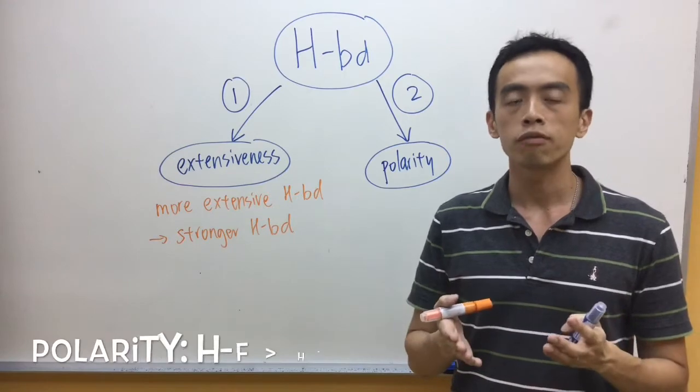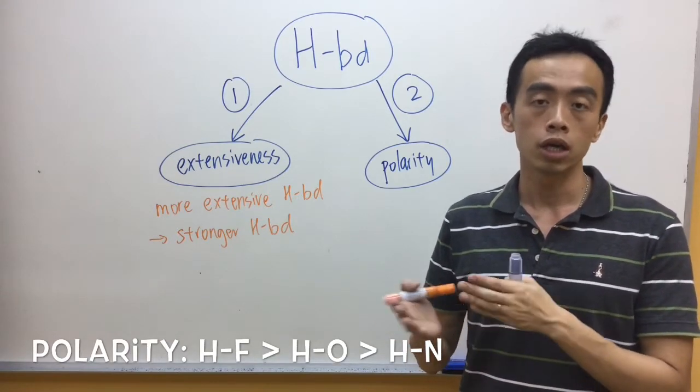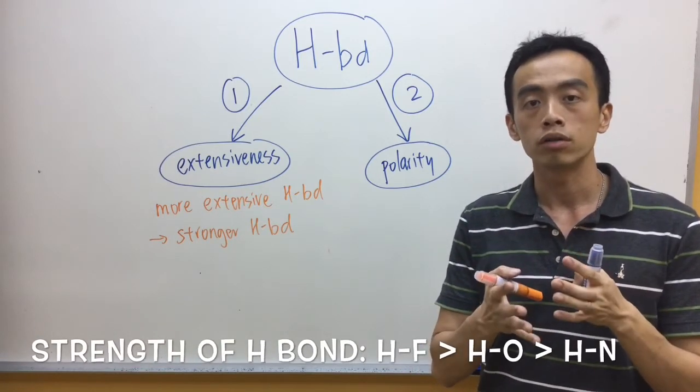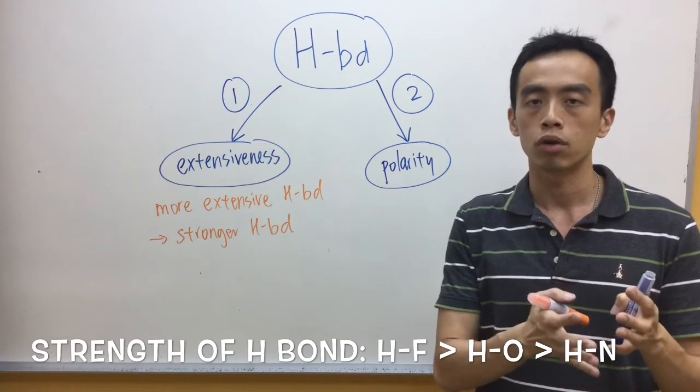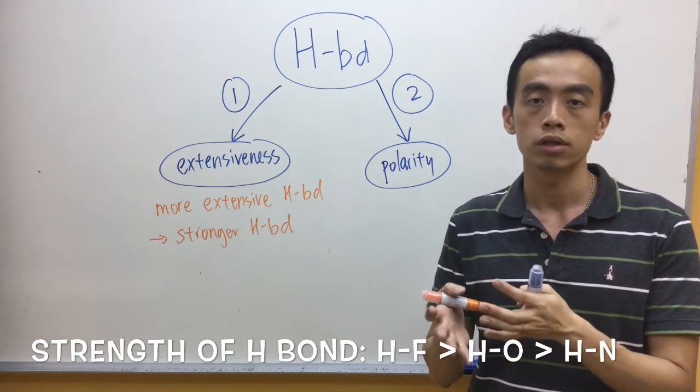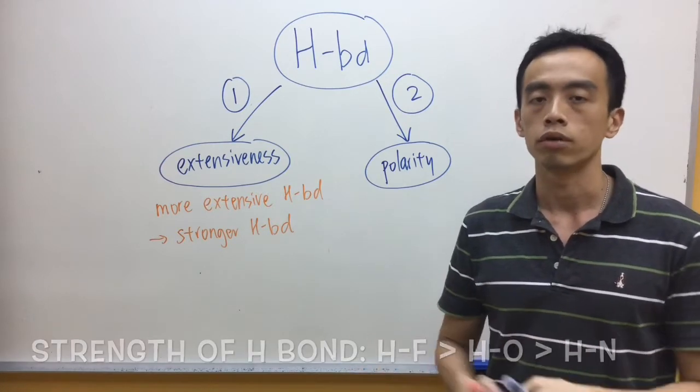Because HF bond is more polar than HO bond, which is in turn more polar than HN bond, therefore, if you have a molecule that contains HF bond, in general, each hydrogen bond will be stronger, as compared to another molecule which contains OH bond and another molecule which contains NH bond.